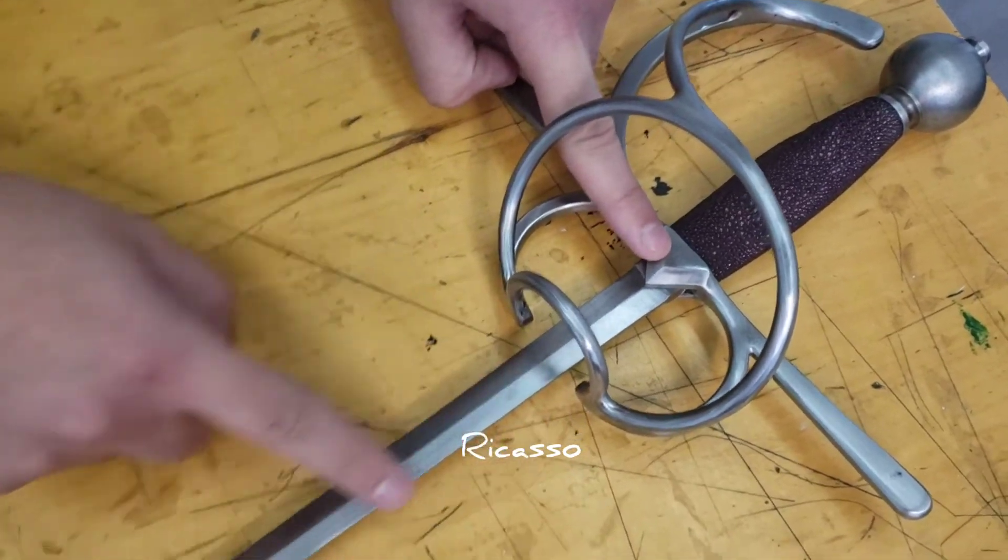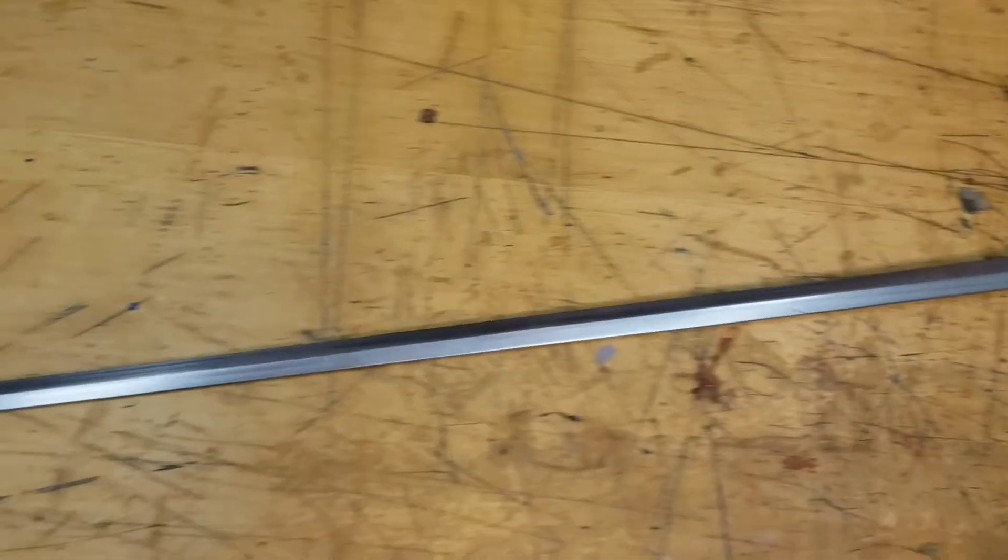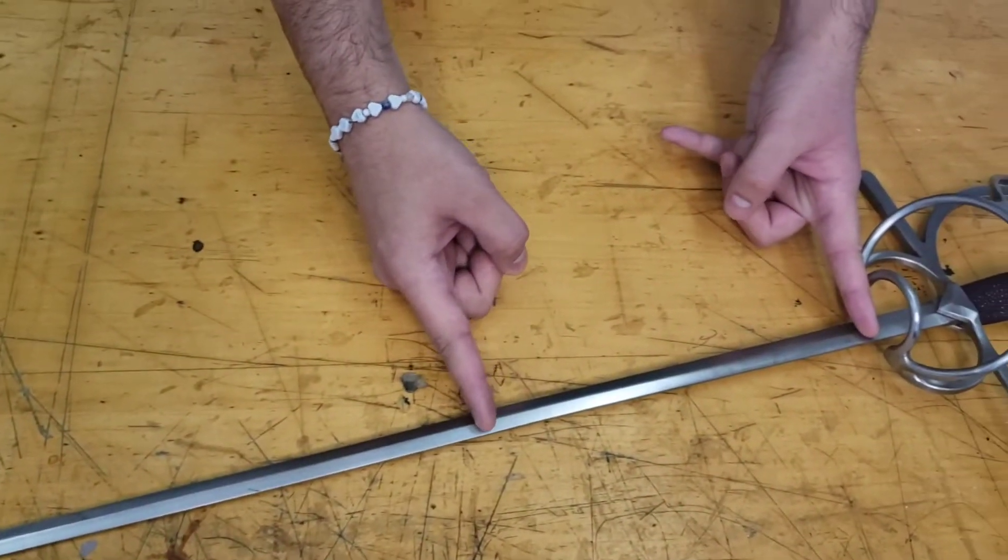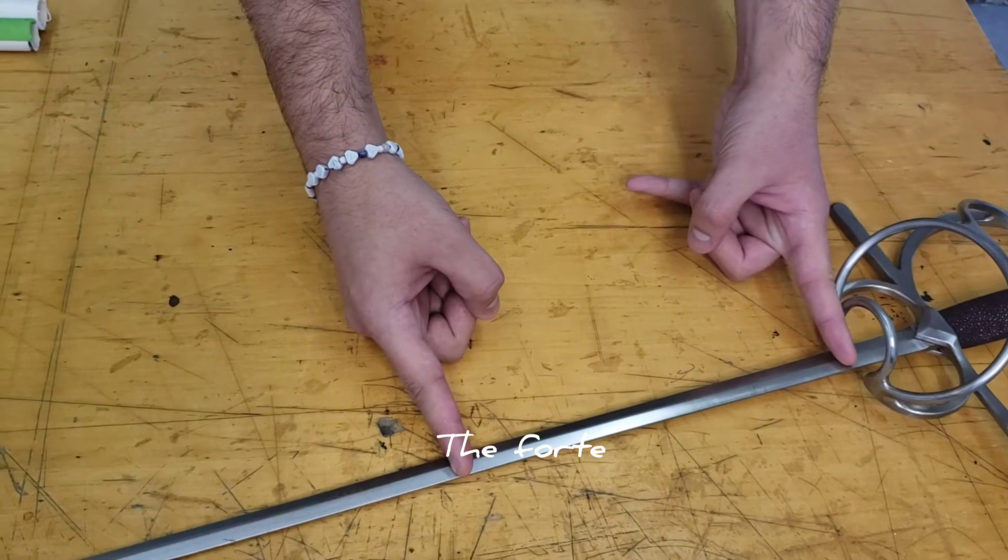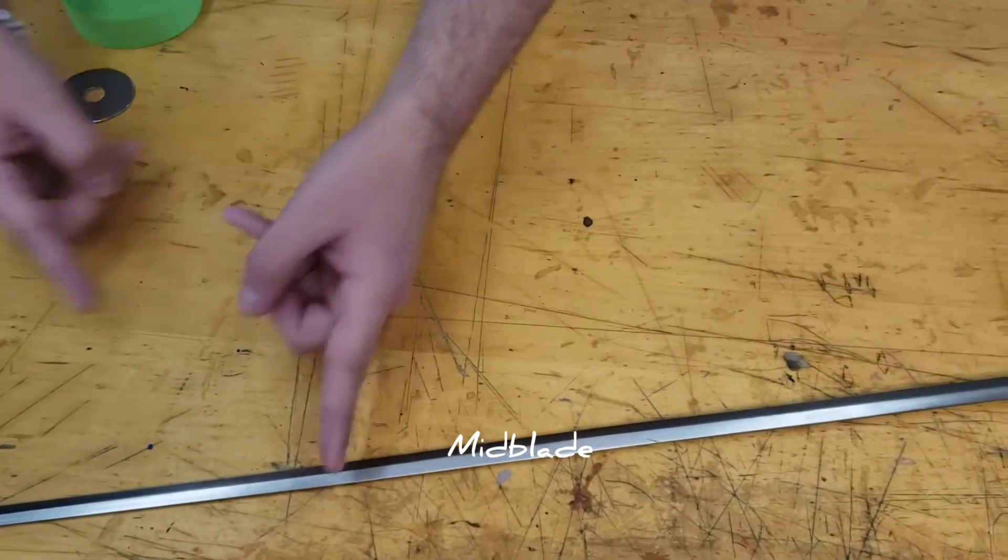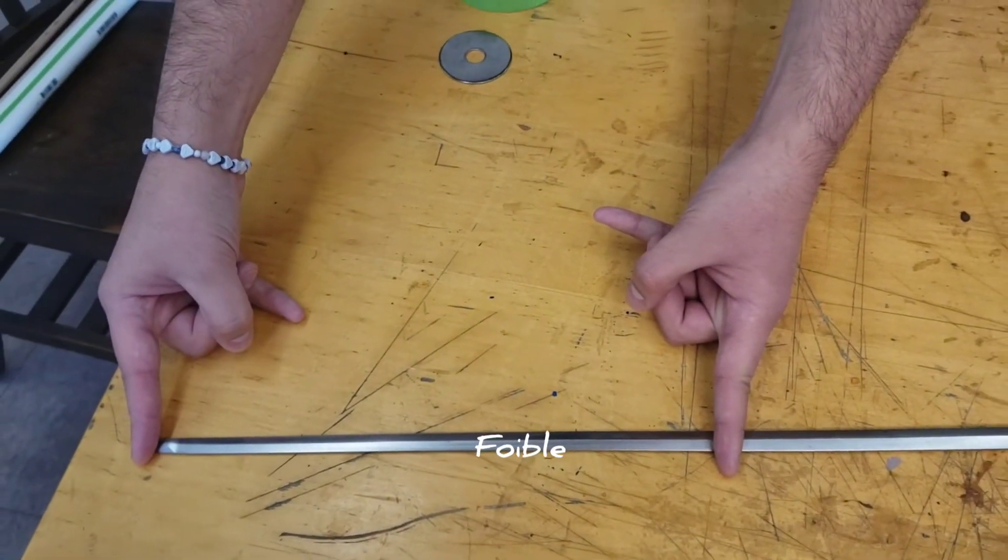Now moving on to the rest of this whole blade, it's in three parts. So the strongest part of the sword is going to be this piece, the widest here, called the fort. Then we will have the mid blade, and at the very end we'll have the weakest part, known as the foible.